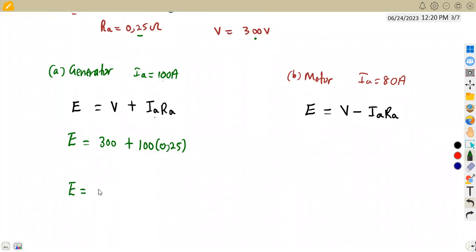If we combine the first part, we are going to obtain 300 plus 100 times 0.25, which is 25. So we are going to add, which is going to be 325 volts in this case.